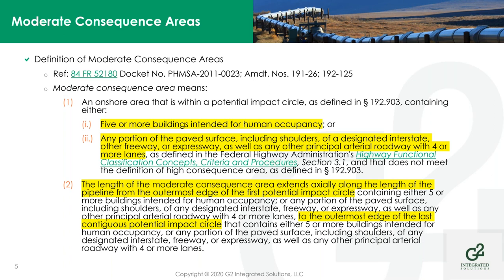The 'or' is the operative word. The new element — added in response to an incident in Tennessee a couple of years back — is that if any portion of the paved surface of a major road is inside the PIR, that also causes a moderate consequence area. Freeways, expressways, and principal arterial roadways with four or more lanes will all cause an MCA if they intersect your potential impact radius. This terminology is defined by the Federal Highway Administration, and the link to that document is included here.